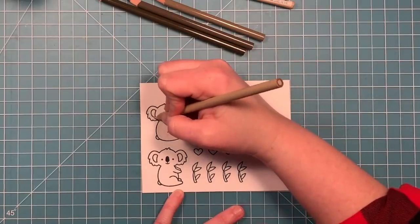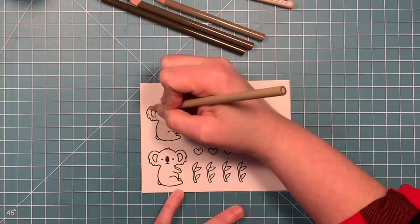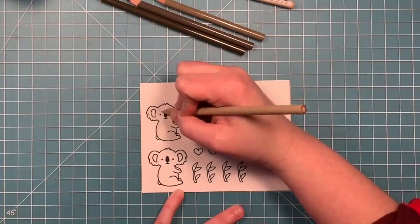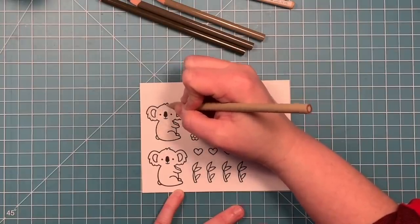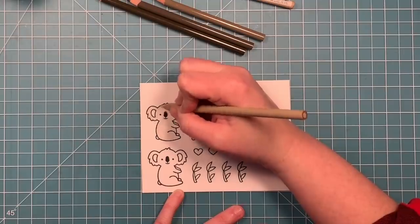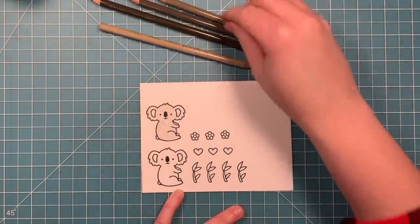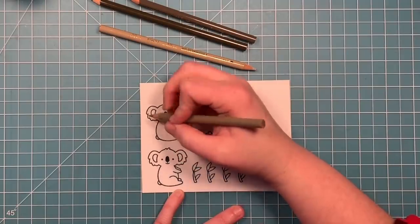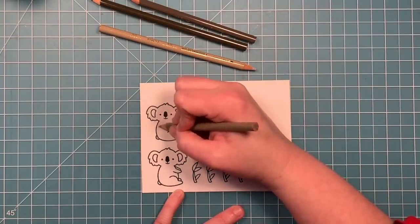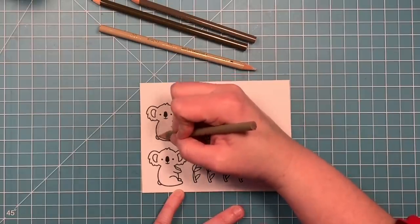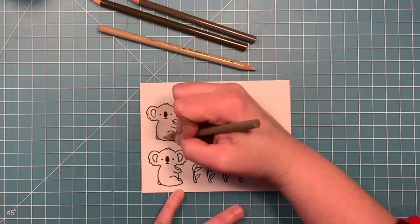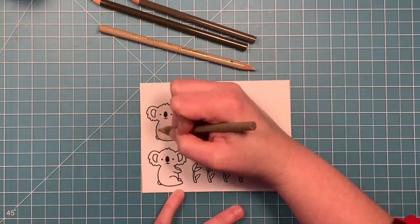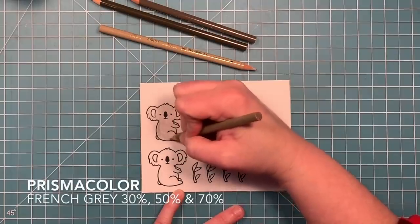Next I'll go in with the next darkest color and start putting in some shading. I'm figuring out where my shadow would be along the bottom, his back, under his arm, that tail, the back leg, that sort of thing.